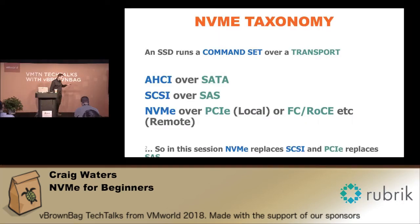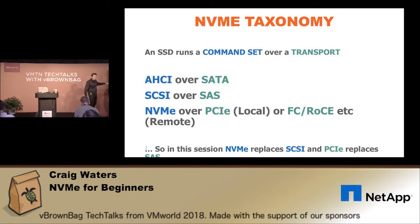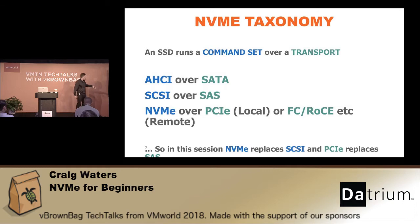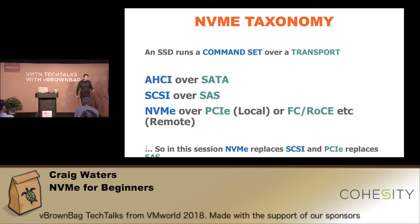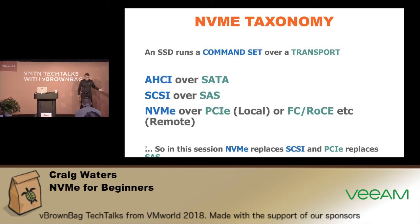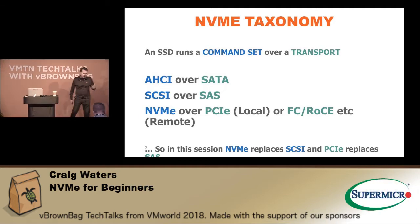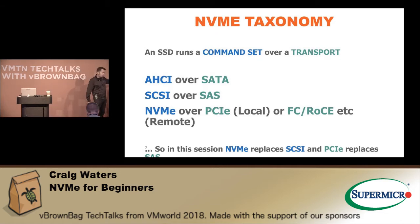I've got a bit of a taxonomy picture here, so I want to start by clarifying some of the terms typically used and what they translate to when we talk about NVMe. There are three main transports: SATA, SAS, and PCIe — or something like RoCE. These equate to a command set. You're probably familiar with AHCI, which is typically what a boot partition on your server would run from. Then there's SCSI — traditional storage transport — and then NVMe, the new one. These are the translation of terms for command sets versus transports.